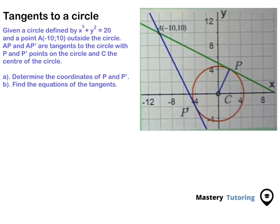Welcome to another video from Mastery Tutoring. Today we're going to do a question taken from analytical geometry, Grade 12. It reads as follows: given a circle defined by x squared plus y squared equals 20, and a point A with coordinates (-10, 10) outside the circle. AP and AP' are tangents to the circle, with P and P' points on the circle and C the center of the circle.